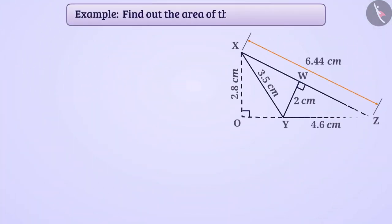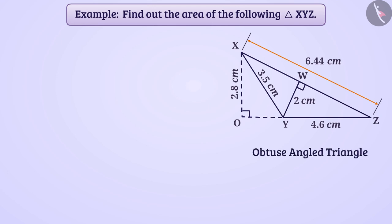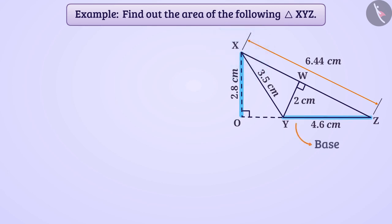Find out the area of the following triangle XYZ. In this obtuse angle triangle XYZ, the line segment XO is perpendicular on the opposite side YZ of the vertex X. If we consider YZ as the base of the triangle and XO as the height, where XO is equal to 2.8 cm and YZ is equal to 4.6 cm.